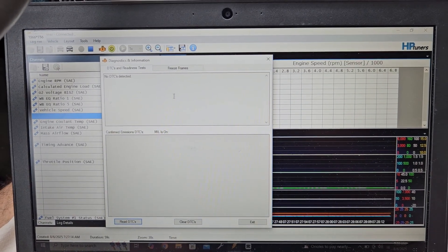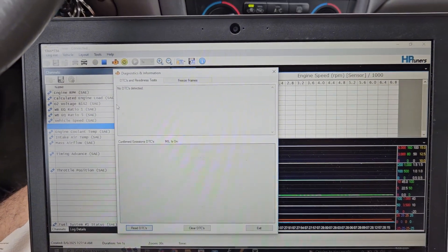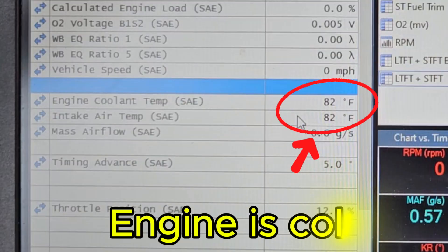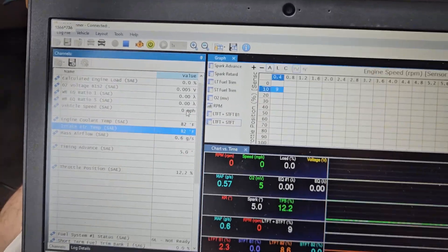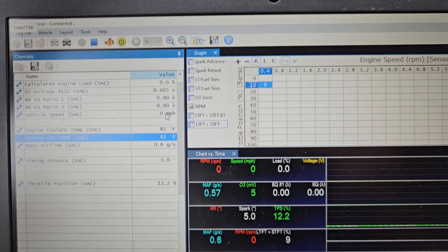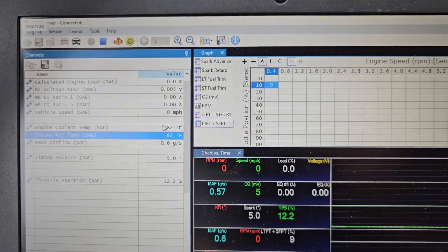So first thing we're doing is scanning and we can see that there are no DTCs. I'm just doing a quick check of my temperature sensors. Since they equal about each other, we know that the sensors are likely reading okay. At a cold soak, all your temperature sensors should be roughly around the same.